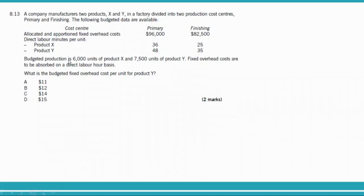Budgeted production is 6,000 units of X and 7,500 units of Y. Fixed overhead costs are to be absorbed on a direct labor hour basis. The requirement asks: what is the budgeted fixed overhead cost per unit of product Y? Product Y will receive some overhead from primary and some from finishing, so we need to calculate an OAR for each department.